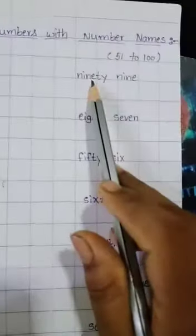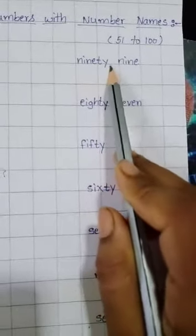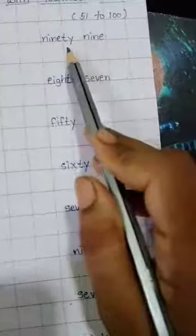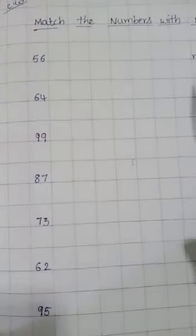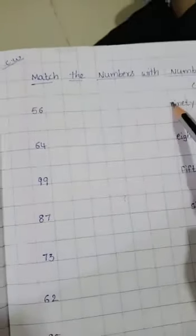Now, first we will read the spelling. N-I-N-E-T-Y ninety, N-I-N-E nine, 99. Is this 99 number? Yes, so we have to match the number 99.